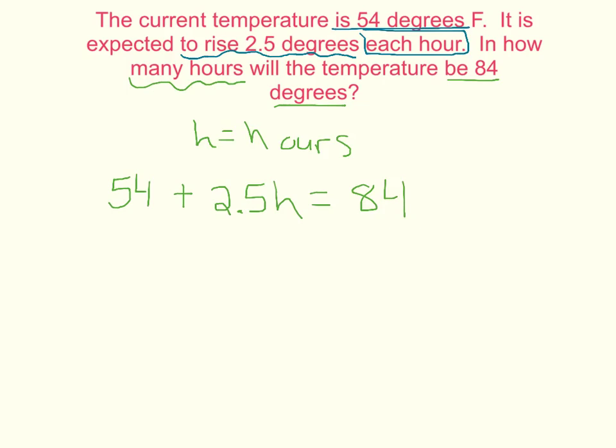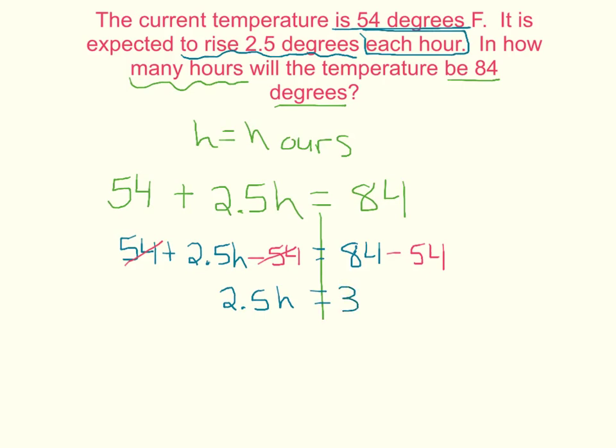So there's our equation, and now we just have to solve it. And we can start by subtracting 54 on both sides. And you get 2.5h left over on the left, and then 84 minus 54 is 30. And now we just have to divide both sides by 2.5. And h equals 12,